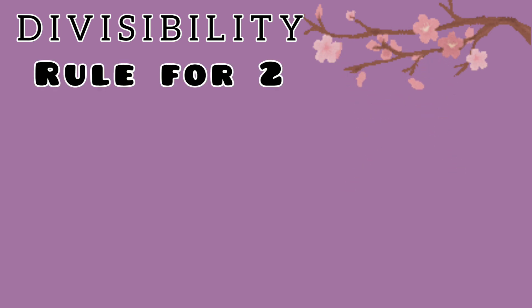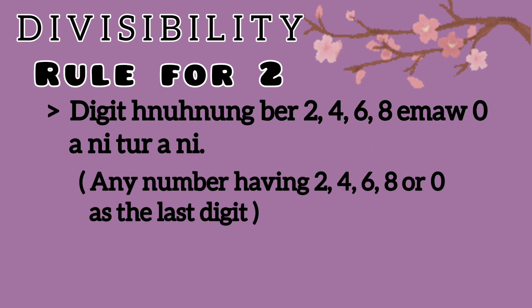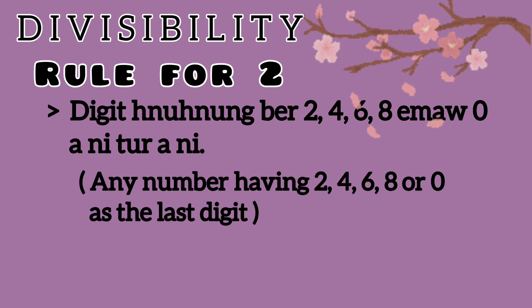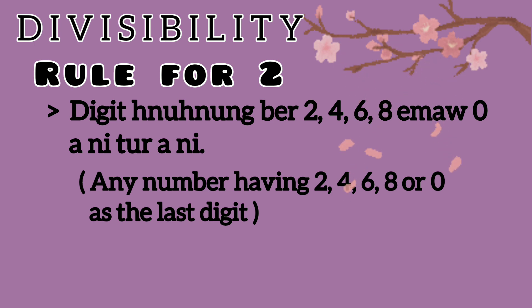Divisibility for 2. We'll have a digit number. The even digits are: 2, 4, 6, 8, 0. So, 2, 4, 6, 8, 0.